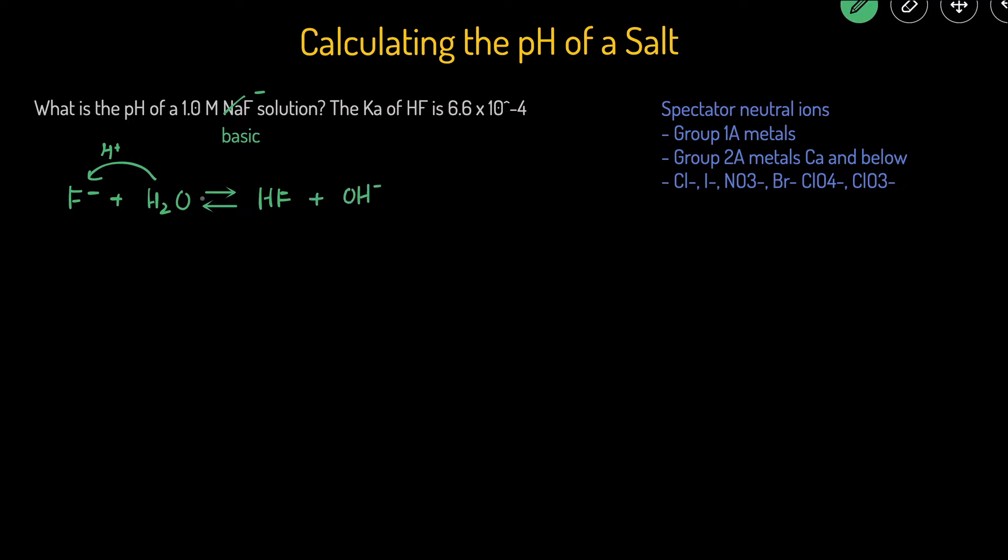I have a double-headed arrow here because this is a weak base. Then we can set up an ice table. The initial concentration of the F minus was 1.0. Water is a liquid, so we can just ignore it. And the original concentration of HF and OH minus, they're both zero because this question doesn't mention anything about them.